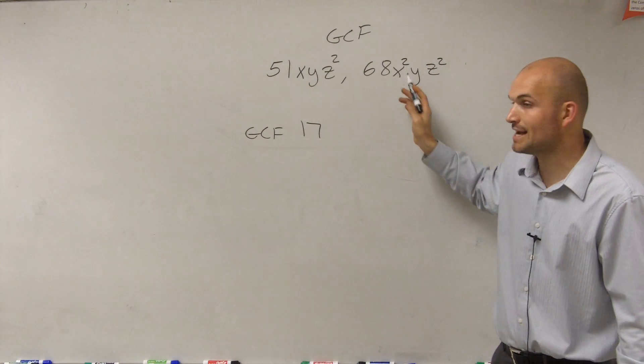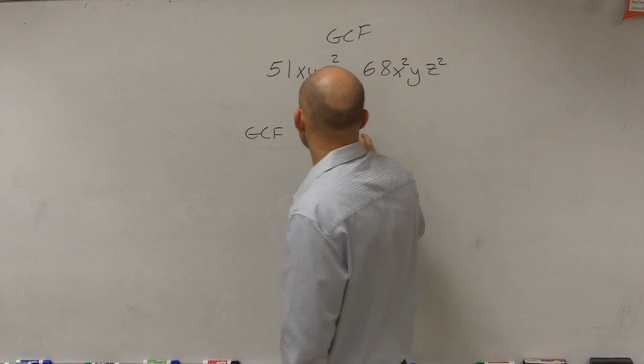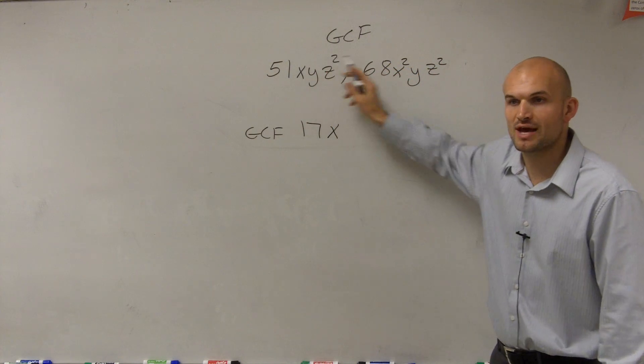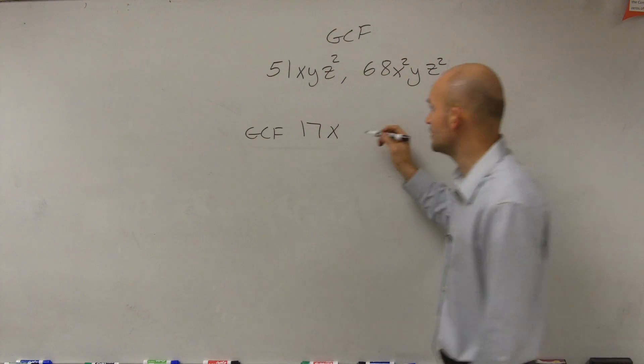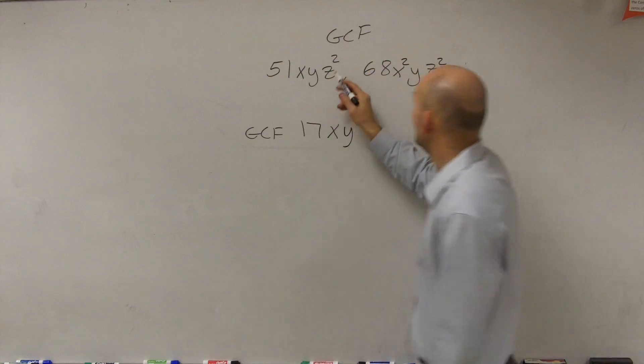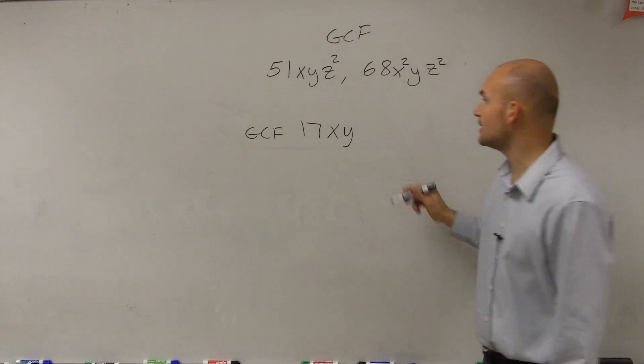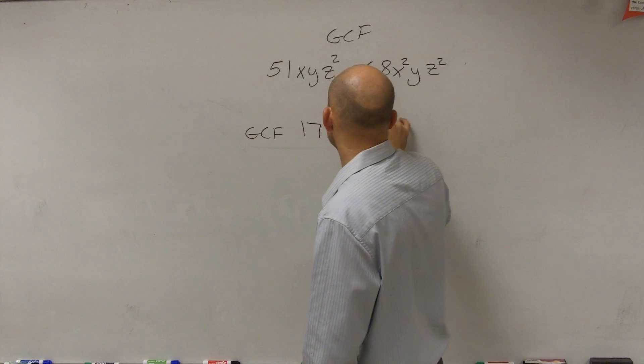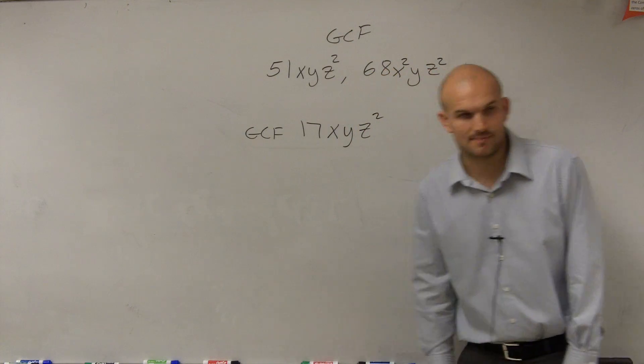So therefore, the GCF for my x variable is going to be x. My y's both have an exponent of 1. So therefore, that's going to be y. And then I have a z squared and a z squared. So the largest variable for z that divides into both of them is z squared.